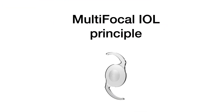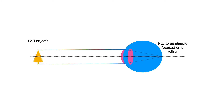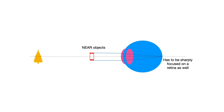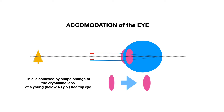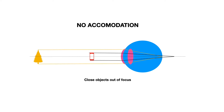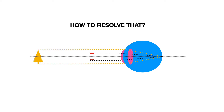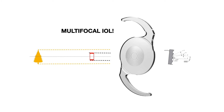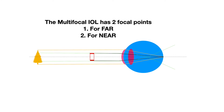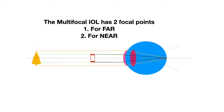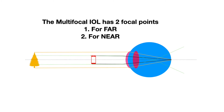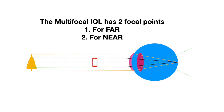Let's talk about the multifocal IOL principle. Our crystalline lens has to focus far objects sharply on the retina, and when you look at near objects, they must be focused sharply as well. In a young healthy eye before age 40, this is achieved by accommodation — when the natural crystalline lens changes its shape to focus closer objects. If there is no accommodation due to aging or a monofocal IOL, close objects are out of focus. To solve this, multifocal IOLs were invented — a special IOL type with a specific grating on its surface that creates multiple focal points for sharp images at different distances.